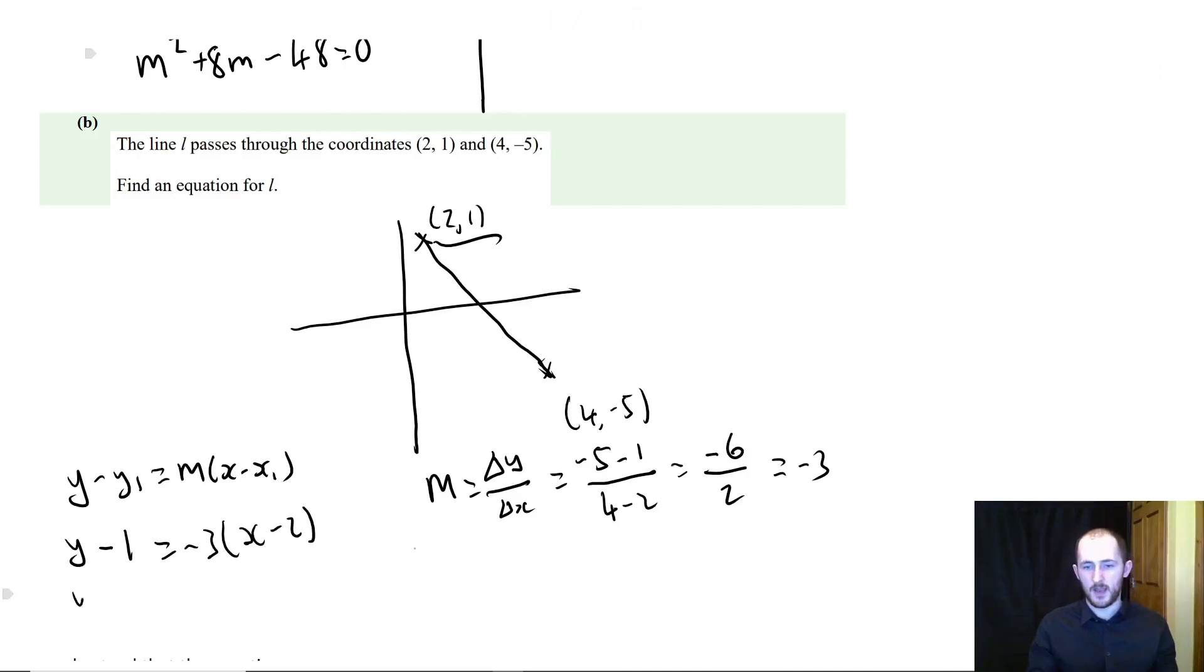So now we have y minus, let's pick this as my y1 and x1. It doesn't actually matter. So y minus 1 equals minus 3 times x minus 2. And that is actually a valid expression. However, if you want to be a bit cleaner, you can leave it in the form y equals mx plus c. If they specify it, if not, then honestly I wouldn't bother. But that's just me. So y is equal to minus 3x plus 5.